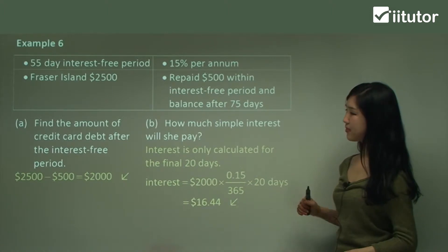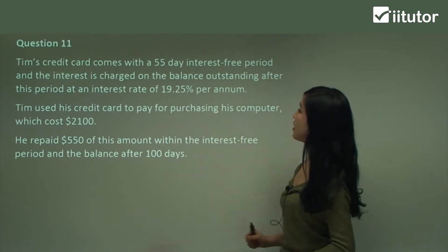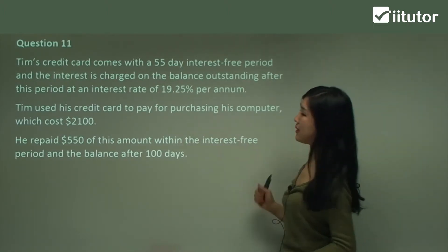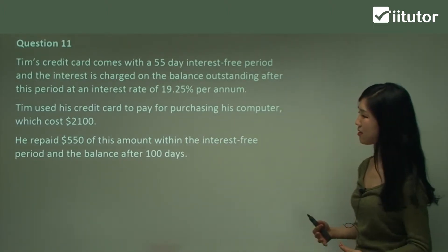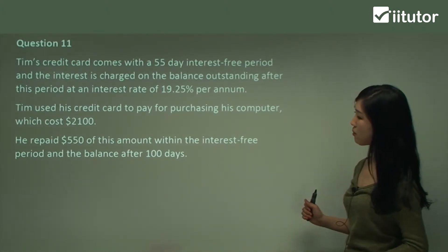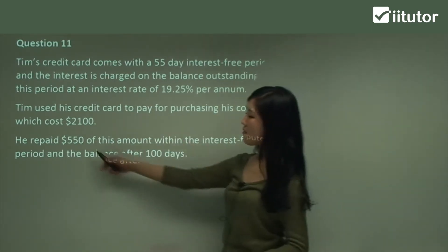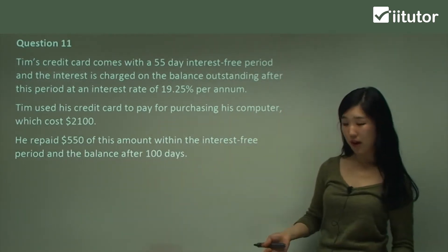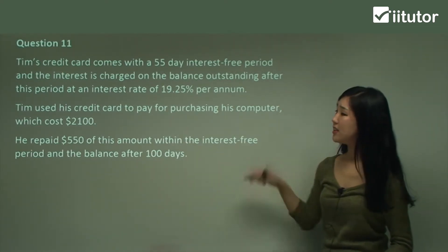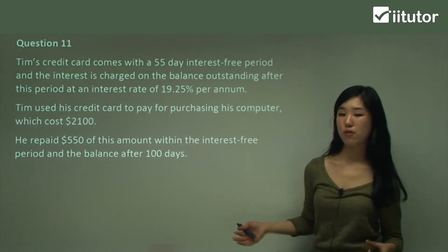Question 11 says: Tim's credit card comes with a 55-day interest-free period, and interest is charged on the balance outstanding after this period at an interest rate of 19.25% per annum. It's a very similar style. Tim used his credit card to pay for his computer, which cost $2,100. Now he repaid $550 of this amount within the interest-free period and the remaining balance he paid after 100 days. So Tim could not repay the whole amount within the interest-free period.